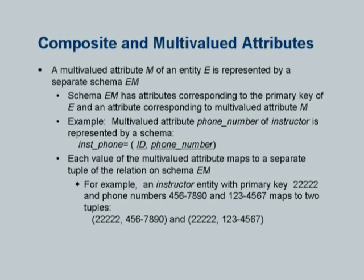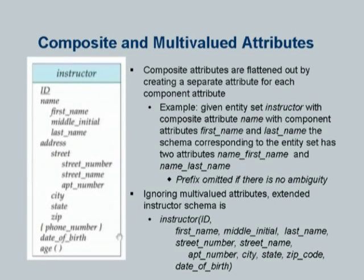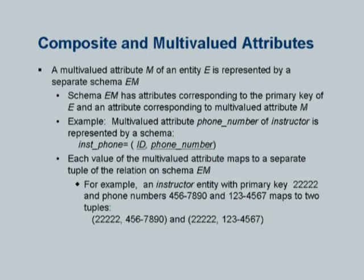Now coming to multivalued attributes. Here is our example with phone number, which was a multivalued attribute. In the relation created from instructor, we cannot have a multivalued attribute, so we create a new relation inst_phone containing ID and phone number. In general, the relation will contain the primary key of the entity and all the attributes of the multivalued attribute. The primary key for this would be ID and phone number combined - it cannot be just ID, because a particular ID may have multiple phone numbers. So instructor 22222 with two phone numbers would map to two different tuples in the inst_phone relation.